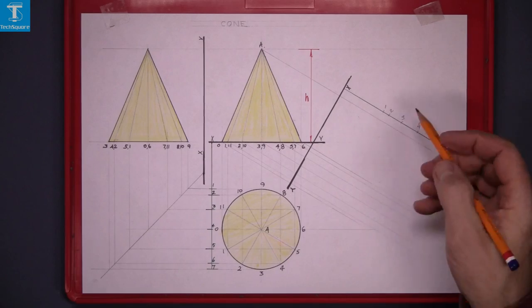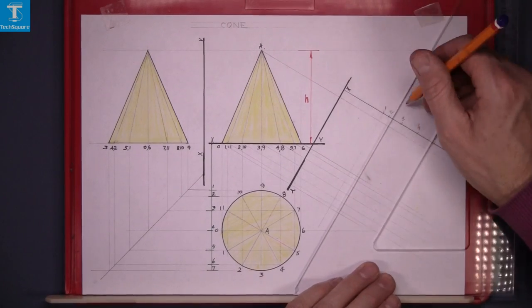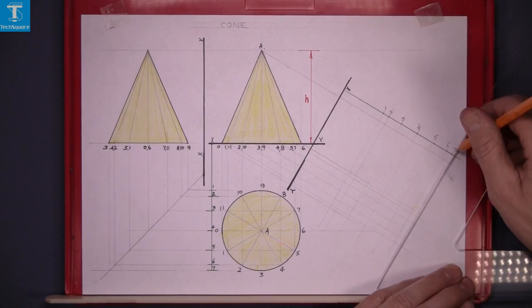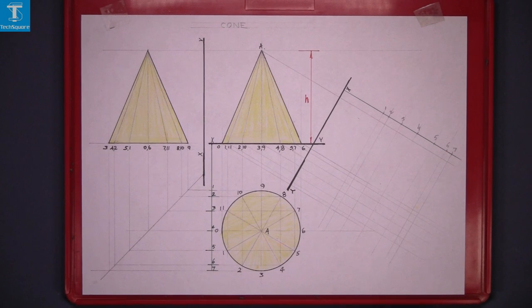Now those points have to be drawn parallel to the xy line so at 60 degrees bring down each of those points. Now finding the points.